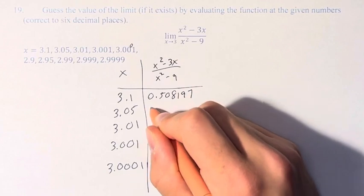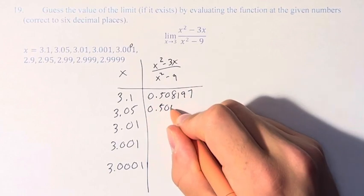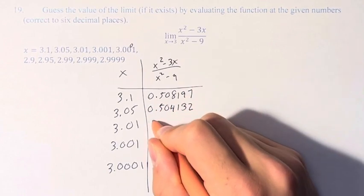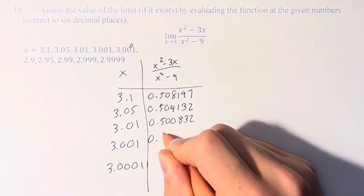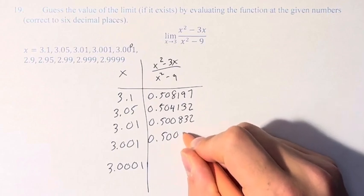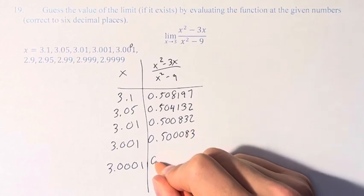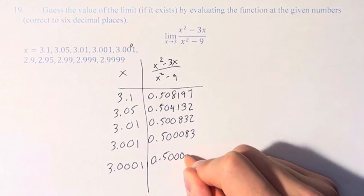You get 0.508197, 0.504132, 0.500832, 0.50083, and 0.5008.